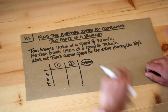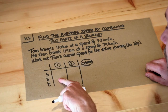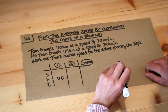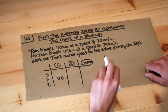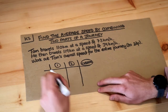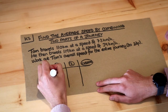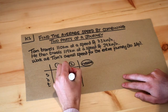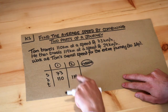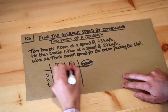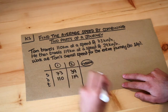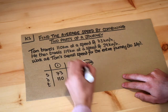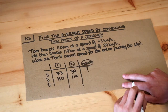Tom travels 110 kilometers initially, so that's the distance for the first part of the journey: 110. I don't bother putting in the units. He went at a speed of 73 kilometers per hour, so that's the speed — S for speed — 73. He then traveled 119 kilometers for the second part at a speed of 39 kilometers per hour. We want to work out his total overall speed.